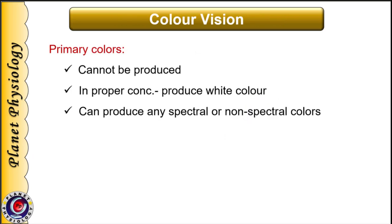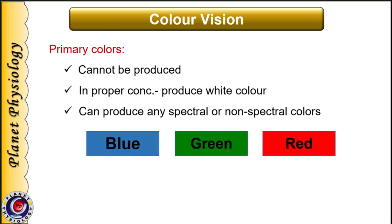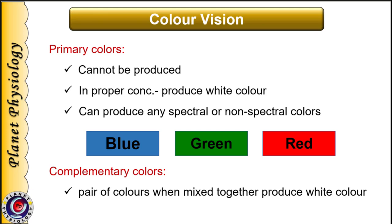Now let us understand the concept of primary colors. These are colors which cannot be created from other colors. When primary colors are mixed in proper concentration they produce white color, and combinations in different concentrations can produce any spectral or non-spectral color. Those who are painters may think primary colors are blue, yellow, and red — but here we are talking about light and wavelengths. So with respect to wavelengths, primary colors are blue, green, and red. Another concept is complementary colors — pairs of colors which when mixed together produce white color.